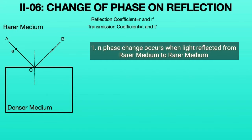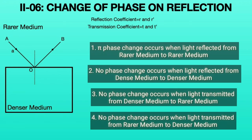In conclusion, phase change only happens when light is reflected from a rarer medium backed by a denser medium. In all remaining situations, there is no phase change at all.